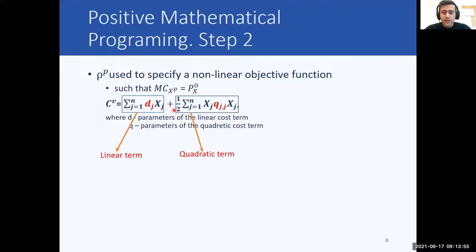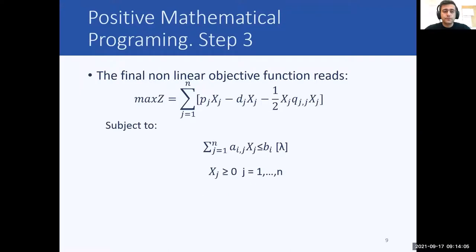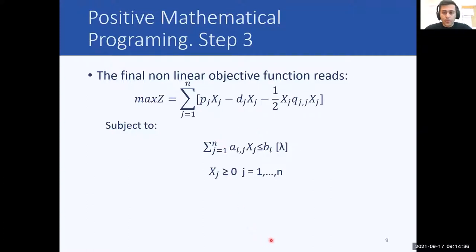In the final step, by plugging in our quadratic cost function into the objective function, we obtain a non-linear programming problem that reproduces observed activity levels. As you can see, in the final form we only have the resource constraint — the calibration constraint is no longer present. The only remaining issue is how to specify the D and Q parameters of our quadratic objective function.